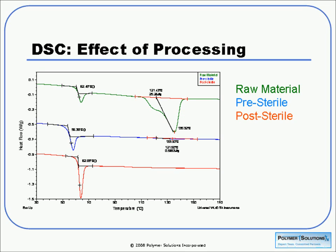If we do a second heat of the sample, we will have normalized the thermal history and erased everything previous. That may be useful to determine if you have differences between lots of material, because the second heat is indicative of the material itself.